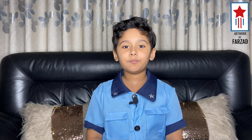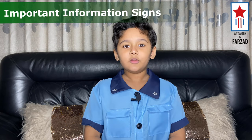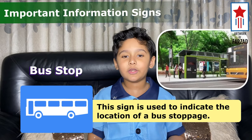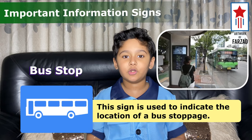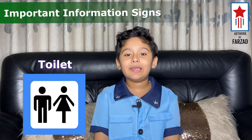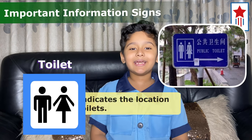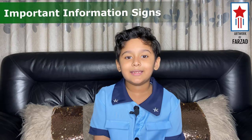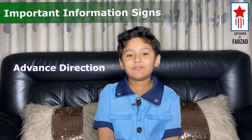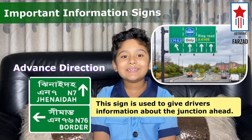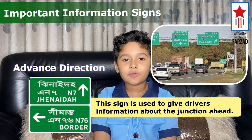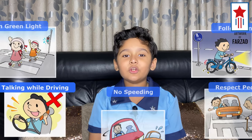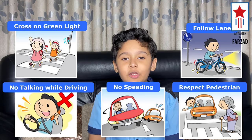Now, let's look at some important information signs. First, the bus stop sign. This sign tells you the location of the bus stop. Next, toilets. This sign indicates the location of a public toilet. Lastly, the advanced direction sign. This sign gives information about the junction ahead.